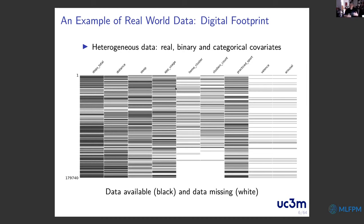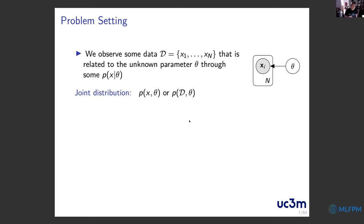If heterogeneous data were not enough to deal with, in real-world applications you also have a lot of missing data. Each black line represents a day of data; white areas represent missing data. Particularly in some types of data, there is a lot of missingness. Most current models need complete data or require imputation. Here we want to deal with this problem in a more formal way — this is why we propose to use probabilistic machine learning.